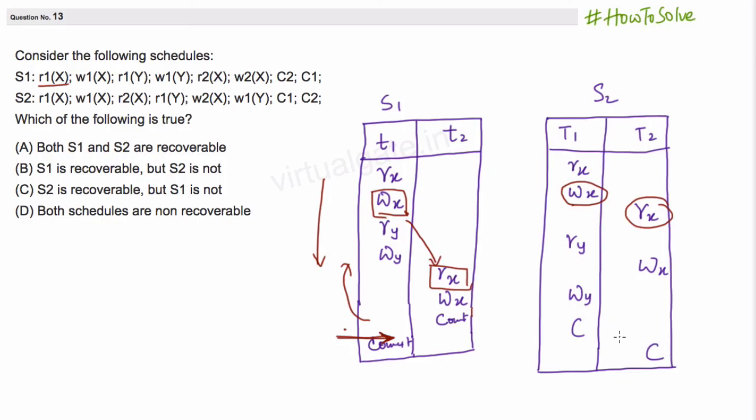Even if let us say the transaction is failing at certain point. If transaction T1 is failing here, none of them are committed. This will also roll back, this transaction will also be cancelled if it is failing here.